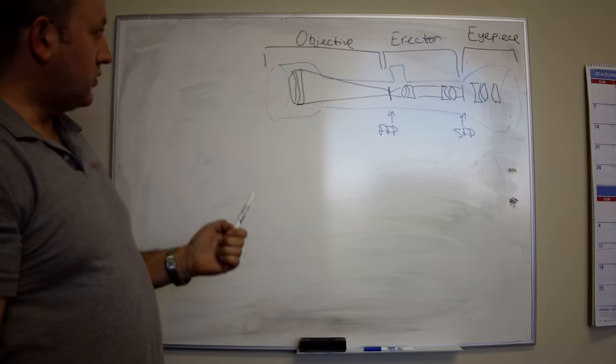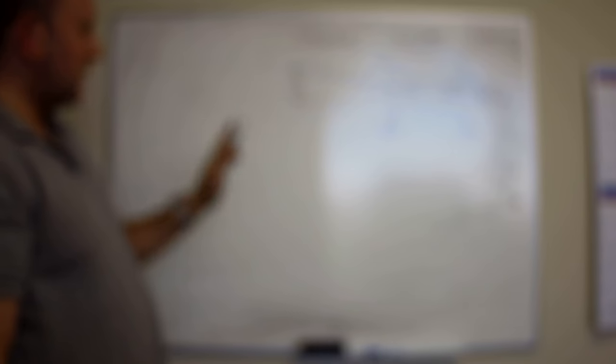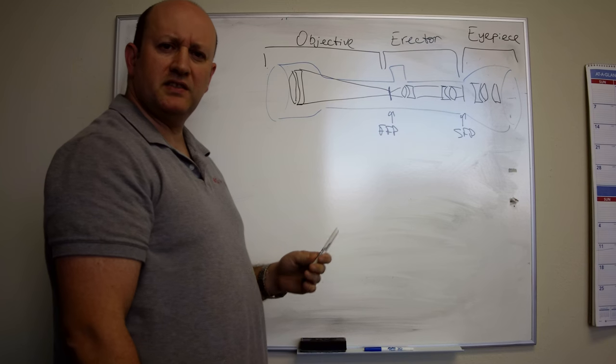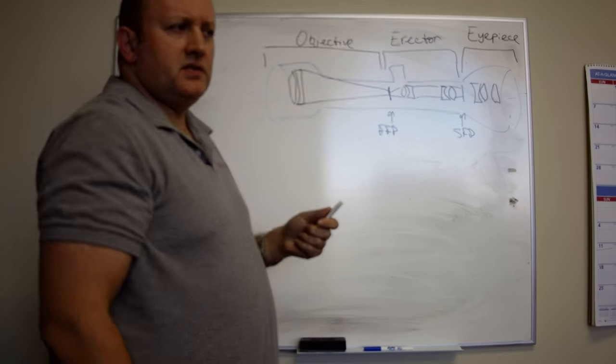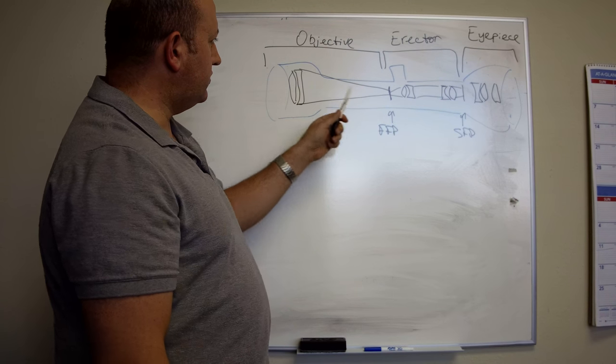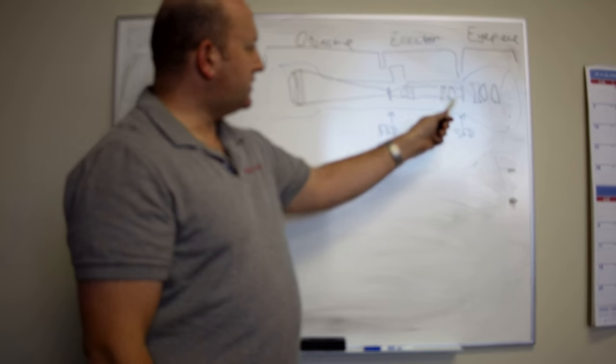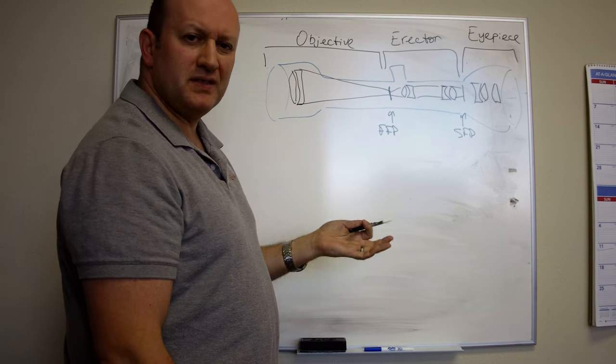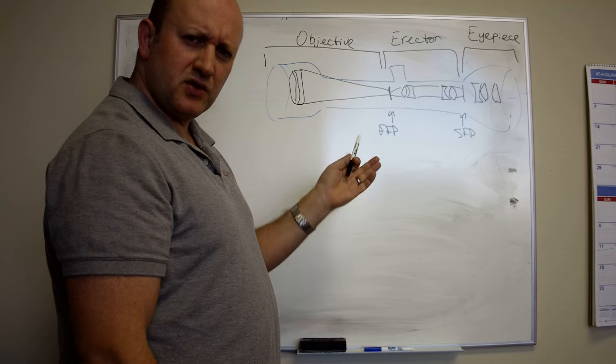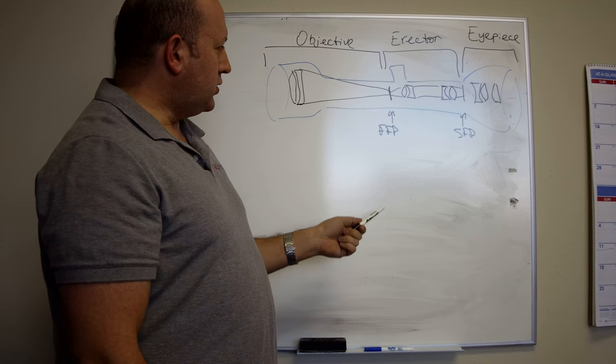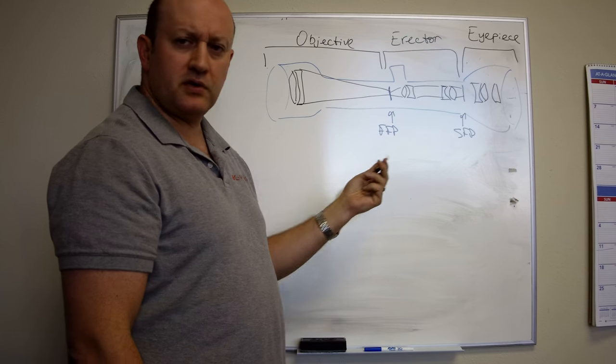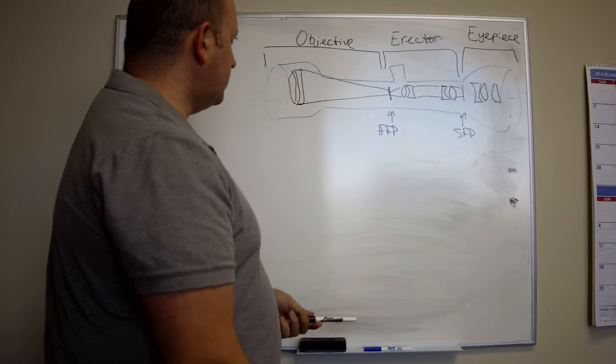Then the erector system basically takes an image here, magnifies it, massages it, inverts it, because here it's flipped and all that. It goes through here, comes out here. This is your second focal plane. And the eyepiece will have a few more lenses that take an image from here and project it out to your eye.